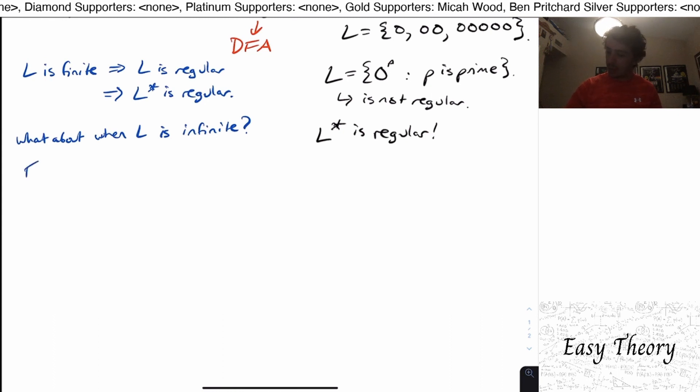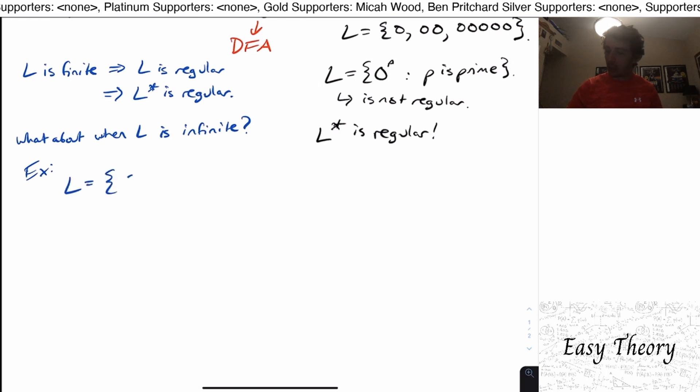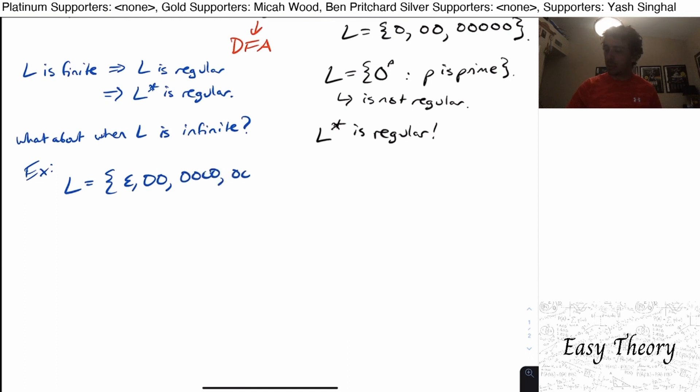So what could possibly happen? Well, suppose that we had, just as an example, we have the language which is all even lengths. So epsilon zero zero, four zeros, six zeros, etc.